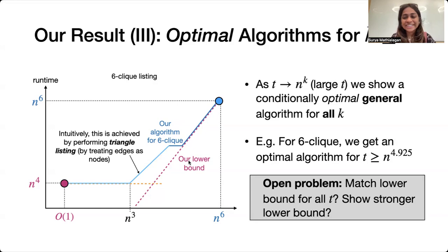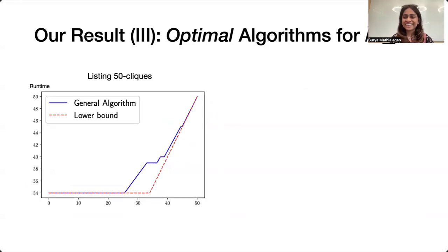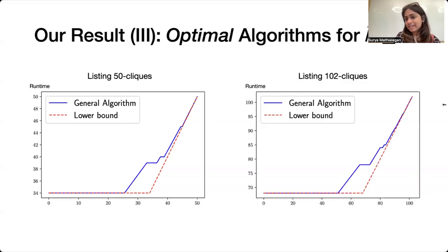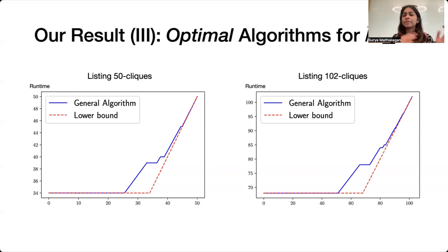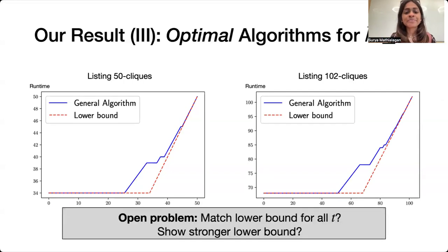So in this middle region, we are able to have matching upper and lower bounds, but this leaves an interesting open problem of matching the bound for all T or coming up with a stronger lower bound. To illustrate more examples: for listing 50-cliques (cliques on 50 nodes), the runtime matches the lower bound at the tail end. Similarly for listing cliques on 102 nodes, you get a similar runtime, but with more steps because you use different algorithms at different parameters — for example, maybe triangle listing at one range and 10-clique listing at another. So it introduces many staircase cases in the graph, and matching upper and lower bounds for all values of T remains an interesting open problem.